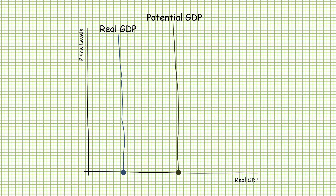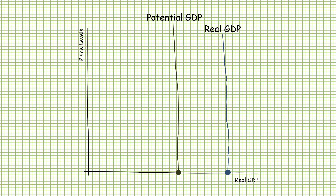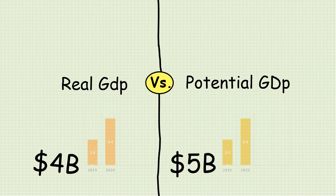It can temporarily go beyond potential GDP if the economy is running above capacity with overemployment of labor and capital. Identifying the economy's potential GDP is helpful when it is compared to real GDP, because it makes for a valuable benchmark for measuring economic growth.